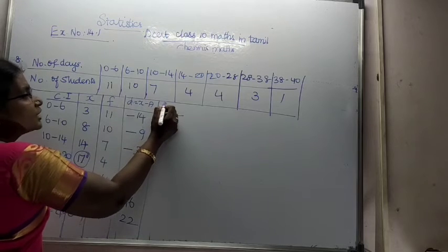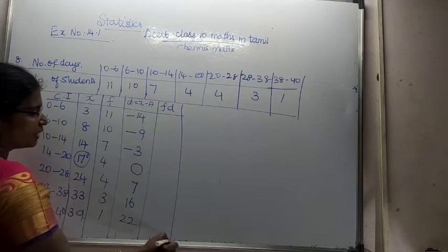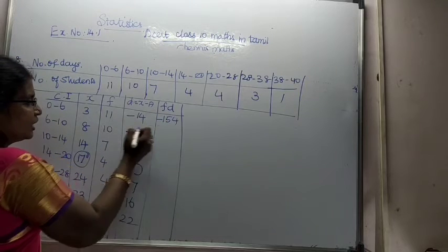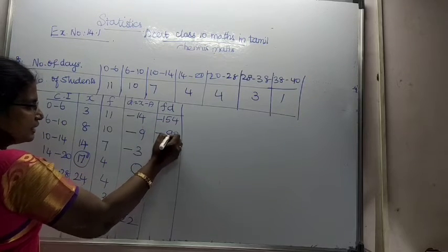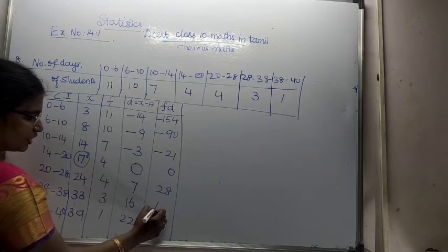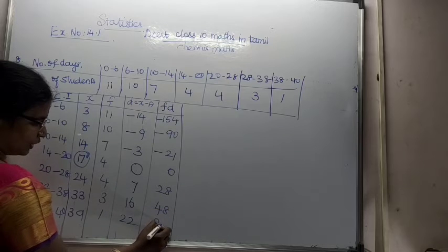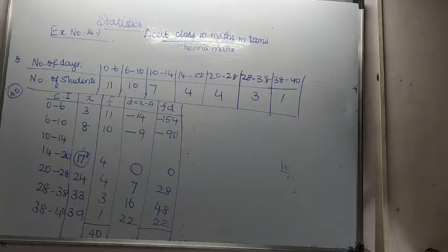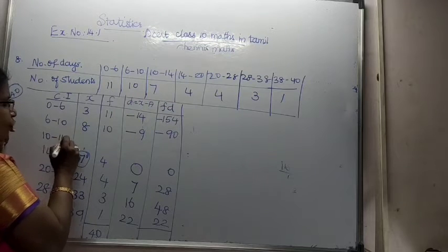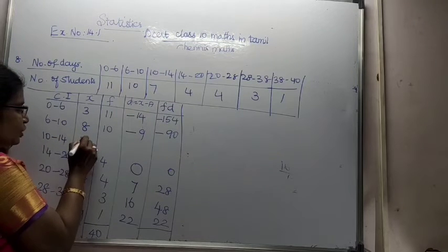Next, summation of FD: F into D. 11 times minus 14 is minus 154. 10 times minus 9 is minus 90. 7 times minus 5 is minus 35. 4 times 0 is 0. 4 times 7 is 28. 3 times 16 is 48. 1 times 22 is 22.